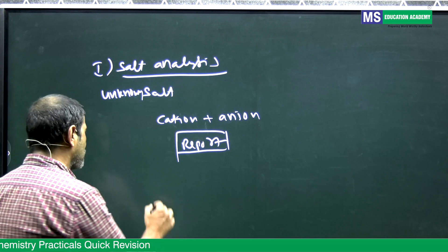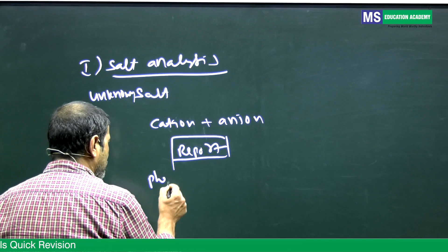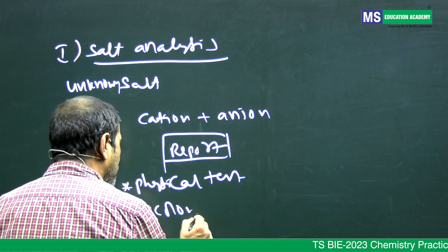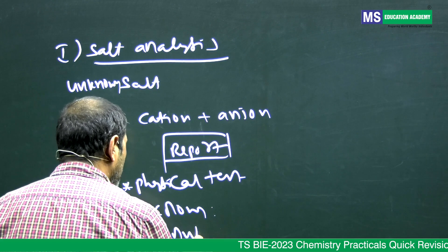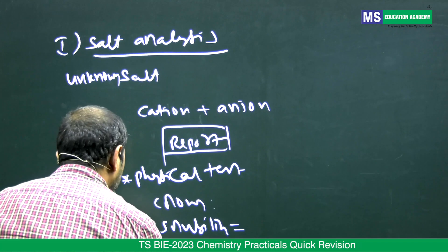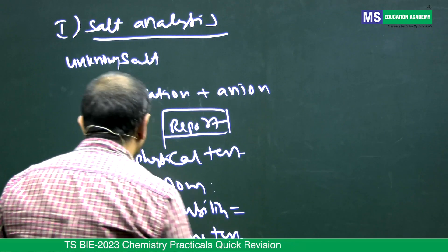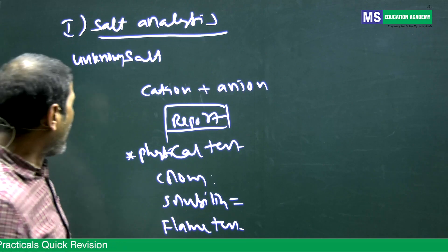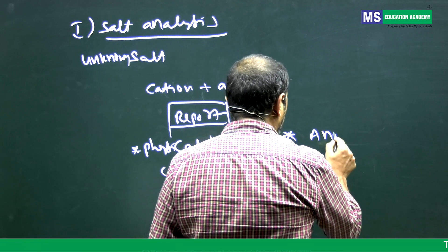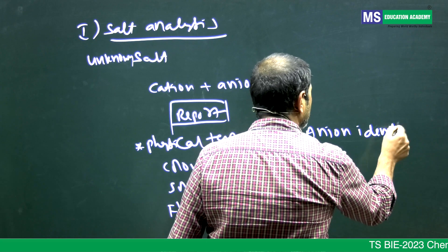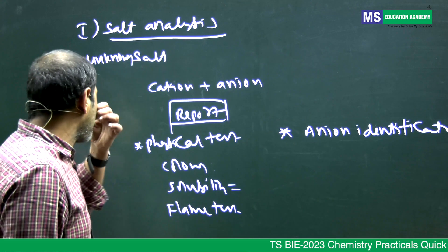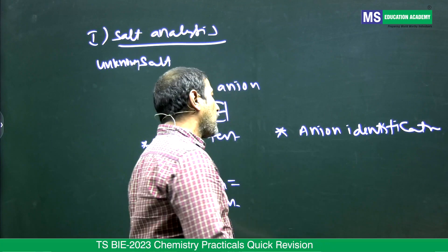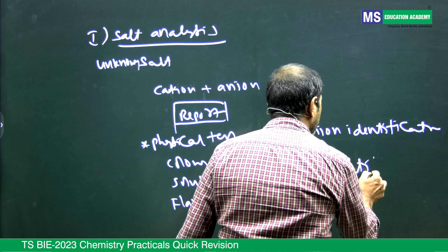For salt analysis, you have to go through three phases. Phase one is physical tests on the given salt — such as color, solubility (whether the salt is soluble in water), and flame test. Phase two is anion identification, where you perform tests to identify the anion present in the given salt.